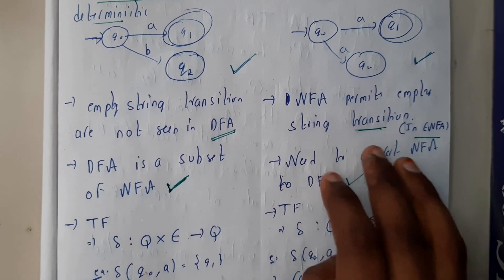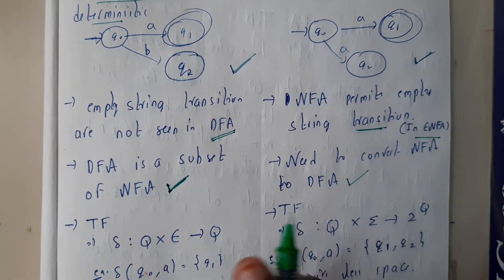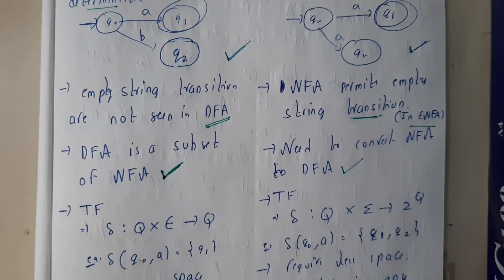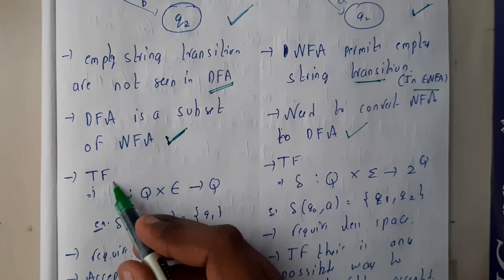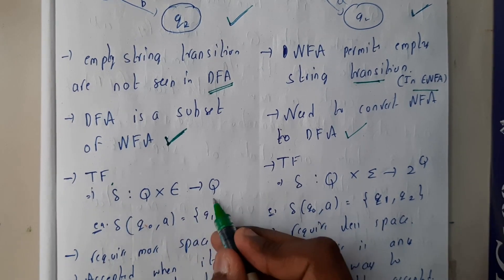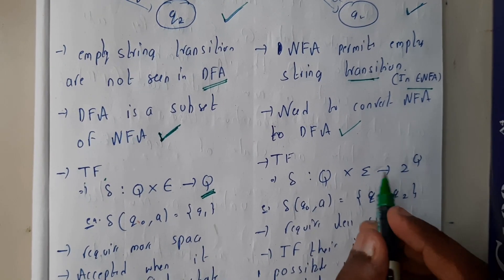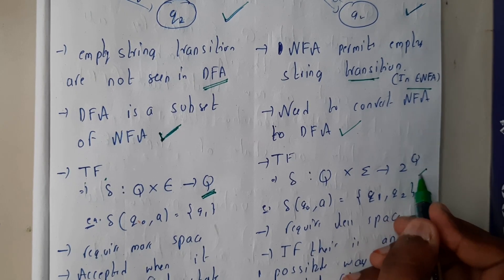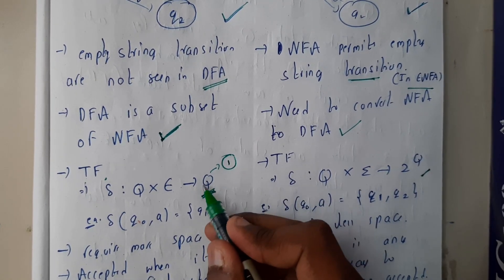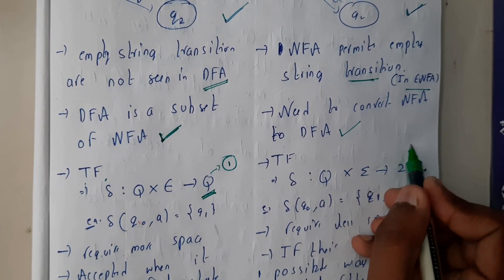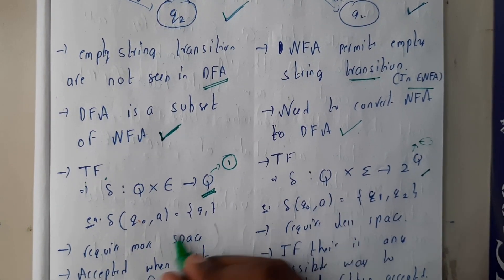This conversion is the thing we are going to discuss in the next tutorial, so don't miss it. The transition function for DFA — I hope everyone knows that — outputs a single state. The transition function for NFA outputs multiple states, that is, it maps to two to the power of Q, since we can have multiple outputs.